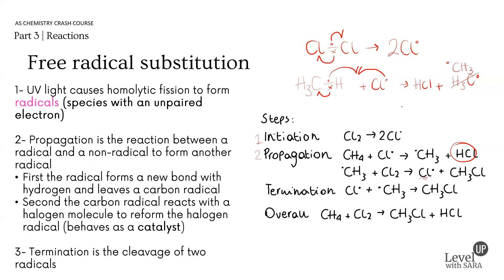Looking at this mechanism: the CH₃ radical reacts with the chlorine. The two electrons come together to form a new bond — CH₃Cl — and the other electron is left on the chlorine, reforming the radical and giving the desired product.